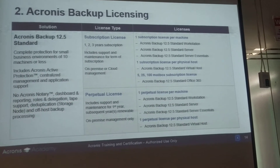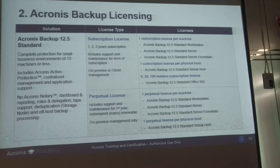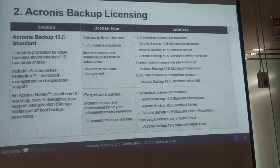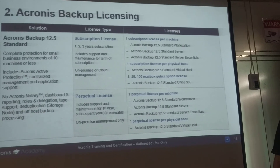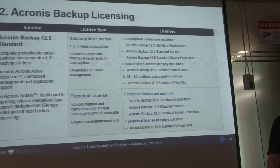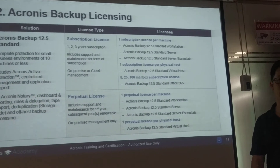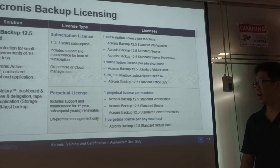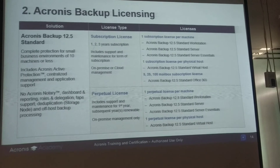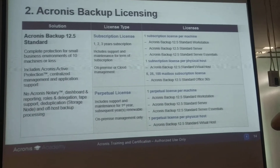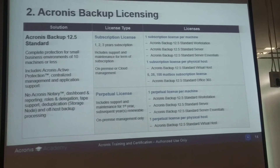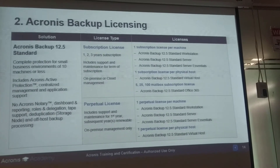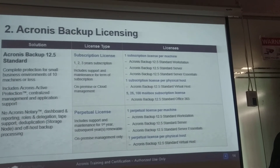For virtualization, other software will charge you by number of cores, number of CPUs, or the virtualization hosts — for example, a two CPU host requires a two CPU license, a four CPU host requires a four CPU license. For us at Acronis, it's very easy: one physical server, one license. You can have two core, four core, eight core — whatever, it doesn't matter.